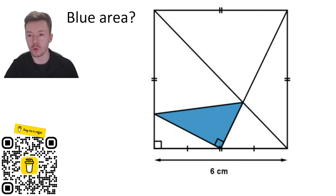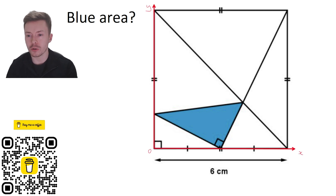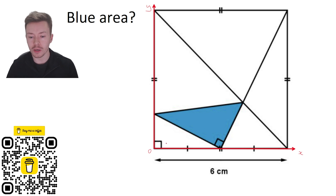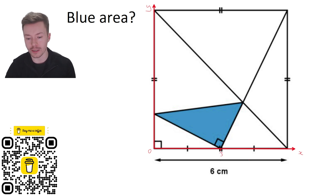My method for attempting this problem is to put this onto an axis, because once I've got that I can start putting some points on. I know that this point here — the midpoint — the full width of the square is six, so that has got to be three.